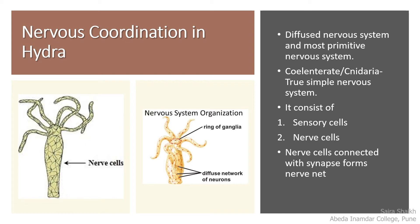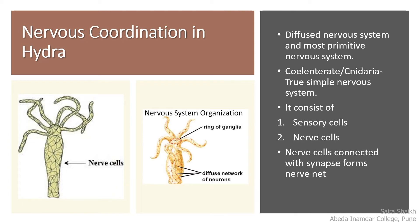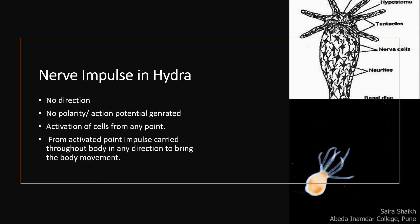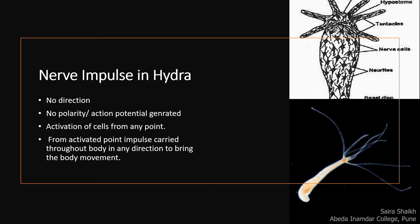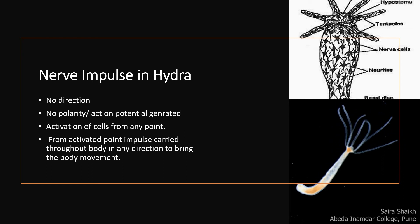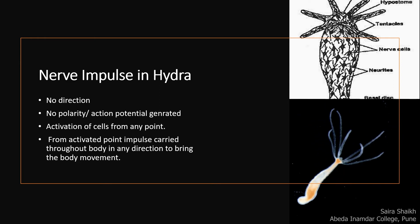The second type of cell is the nerve cell. Nerve cells form a network in the mesoglea. They have fibers, but they are not sensory or motor in nature, as a centralized nervous system is absent. Nerve cells are interconnected by synapses and form a network. They get activated at any point and generate an impulse. Impulses do not have action potential or polarity and can be carried in any direction. The nerve net brings movement in the body or the tentacles for feeding or locomotion.